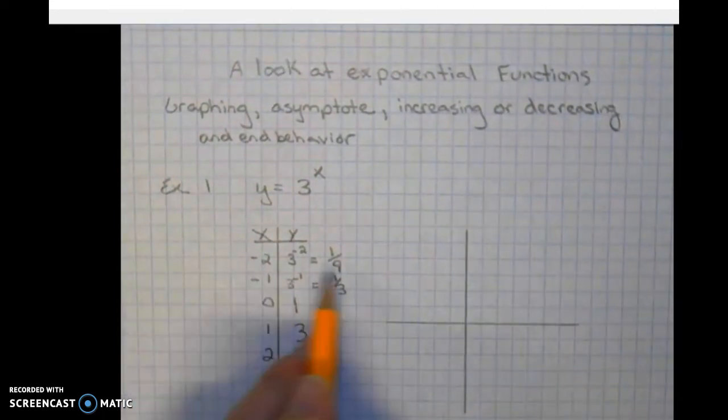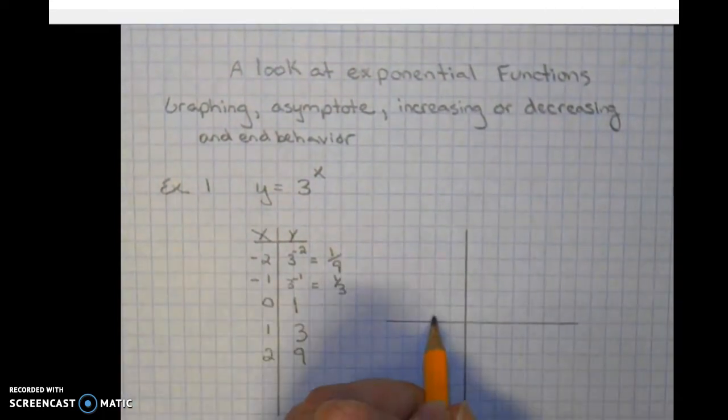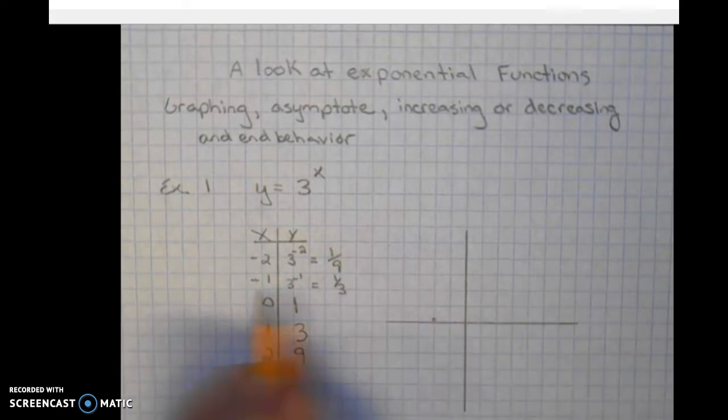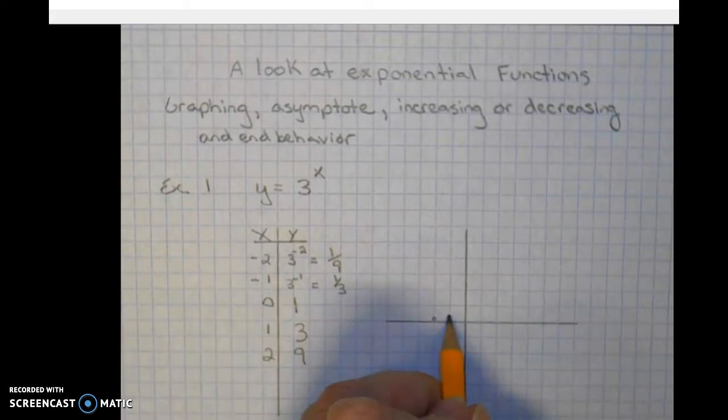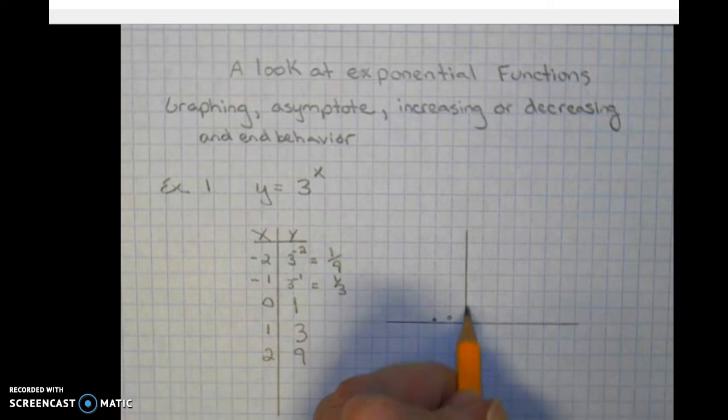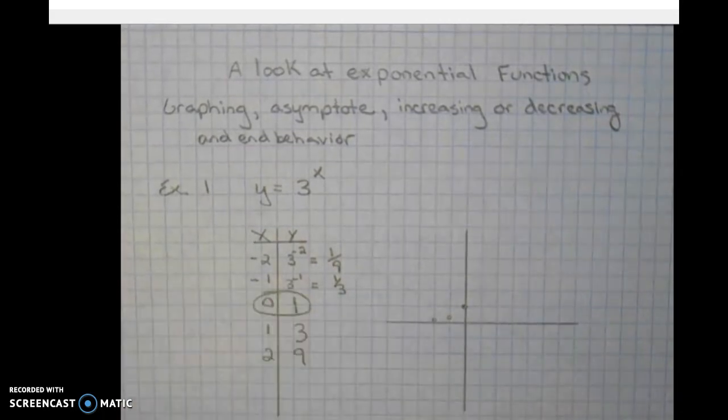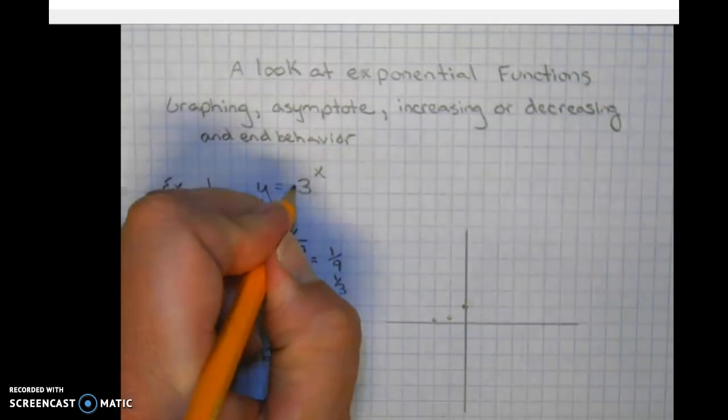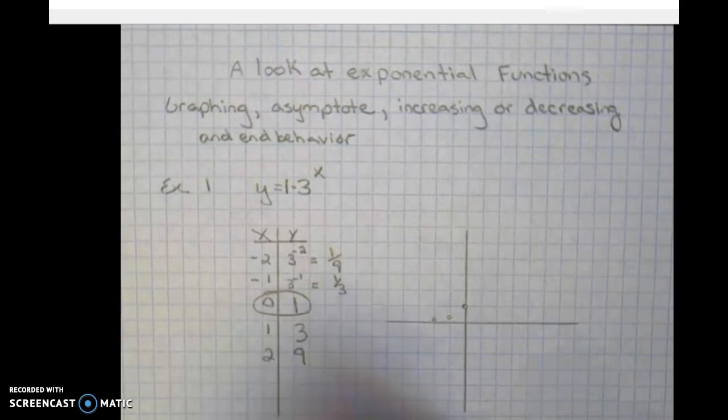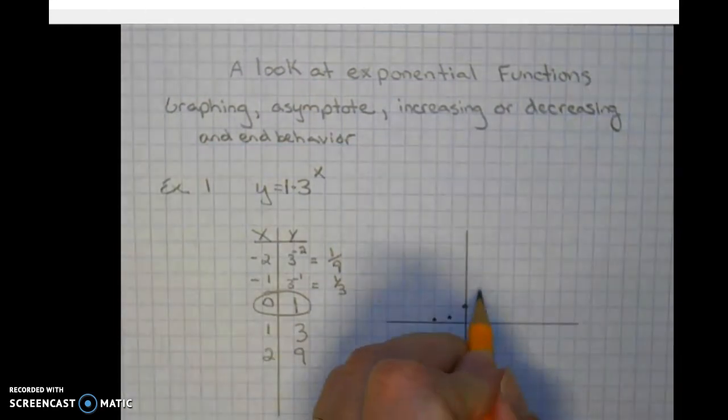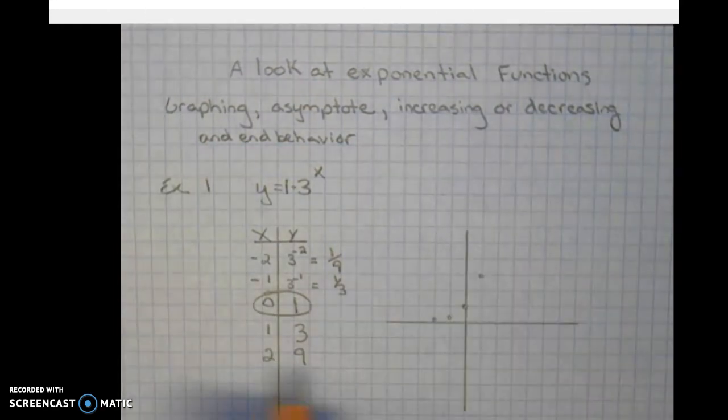So plotting our points. Negative 2, 1 ninth. Negative 1, 1 third. 0, 1, also known as our y-intercept. Notice that's found here in the very front of this format. 1, 3 and 2, 9.